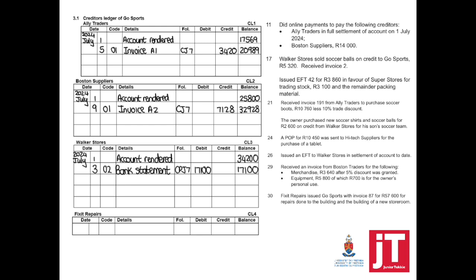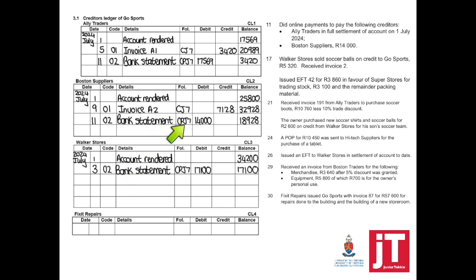Day 11: Online payment to pay the following creditors. AliTraders — creditor number 1 — settlement of account on 1 July 2024. Online payment means bank statement. That amount is $17,569, so our new balance is $3,420. Boston Suppliers — creditor number 2 — payment of $14,000, new balance $18,928. From the CPJ, details will always be bank statement or EFT. If a payment is made, the amount will be debited because we owe them less money.